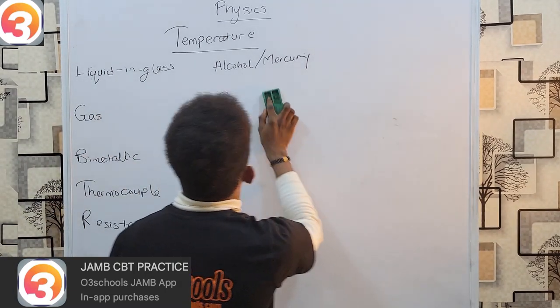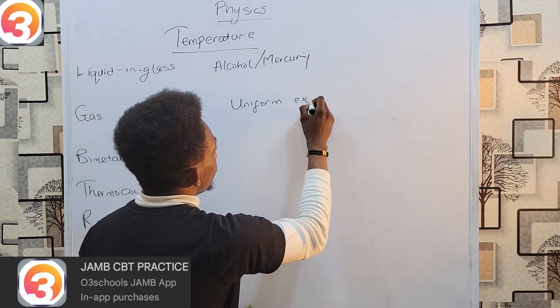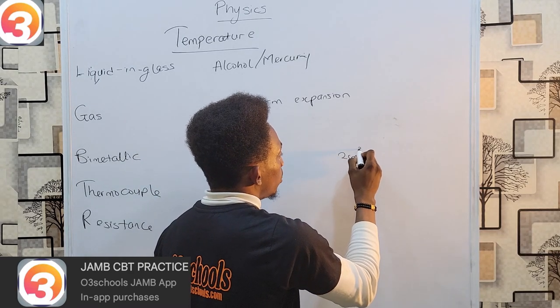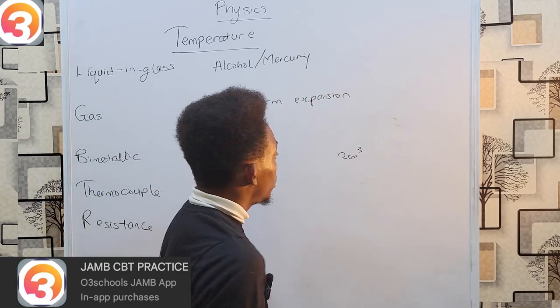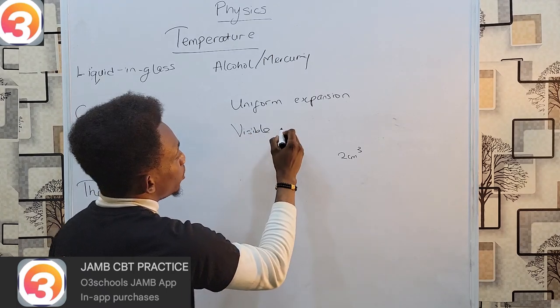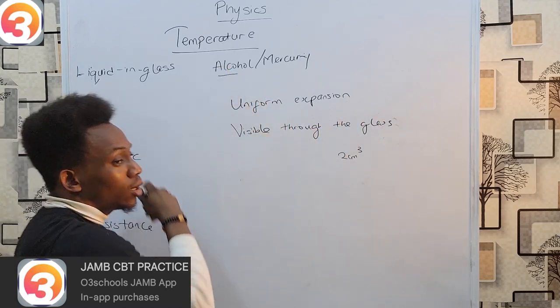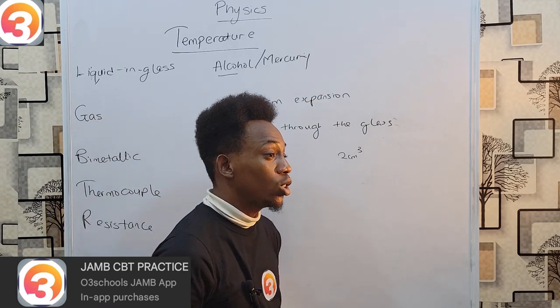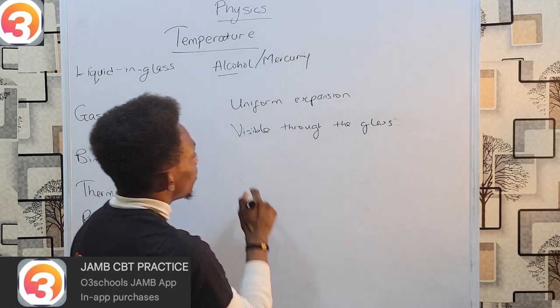One of the important things we look for is that this material must have uniform expansion. That means the expansion as temperature changes should be uniform. It could increase by maybe two centimeter cube for every degree rising temperature, constant and uniform, making it easy for us to calibrate this thermometer. A good thermometric liquid must be visible through the glass. Alcohol is rather translucent, but a bit of coloring is added to make alcohol suitable because its other advantages outweigh this slight disadvantage. It must also have high expansivity.